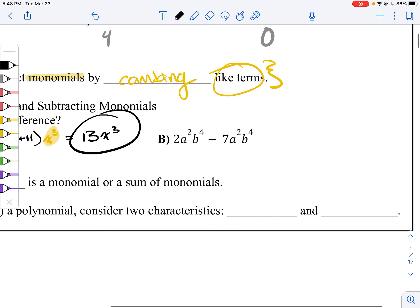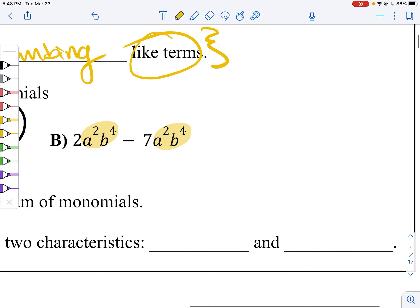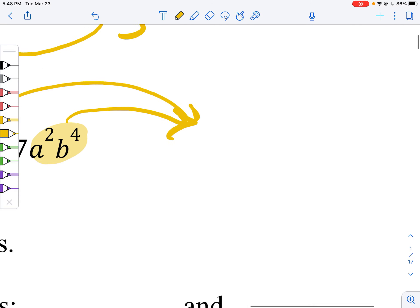Here we have another example of like terms. We've got a squared times b to the fourth power. Notice they're multiplied together. So these become one term. We're going to distribute that guy out.